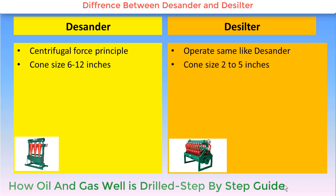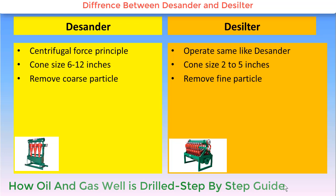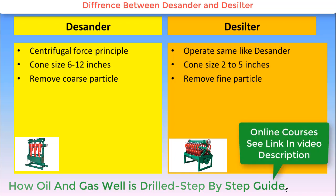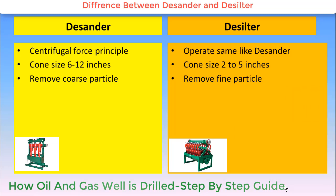Desander removes coarse particles, whereas desilter removes fine particles. As the name indicates, desilter is mainly for silt particle removal, and desander is mainly for removal of sand-sized solid particles.